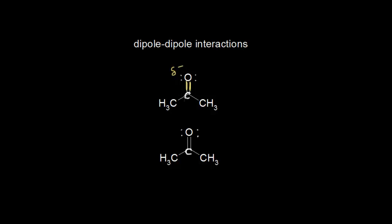Those electrons are moving away from this carbon, so the carbon is losing a little bit of electron density and becoming partially positive. For this molecule, we get a separation of charge — a positive and a negative charge — so we have a polarized double bond and a polarized molecule. There are two different poles, a negative and a positive pole, so we say that acetone is a relatively polar molecule.